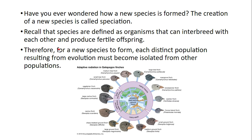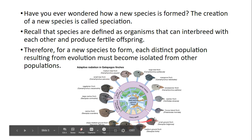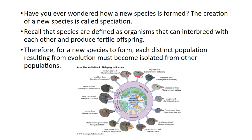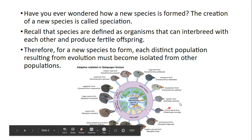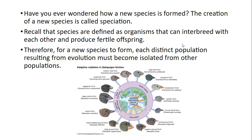So in order to create a new species, each distinct population resulting from evolution must become isolated from the other populations. For example, we've got Darwin's finches. As long as every single one of these finches can interbreed and produce fertile offspring, they are a single species. But if they become isolated from one another, they can go through the process of speciation where they could no longer reproduce with each other, and therefore we could say they are now a different species.